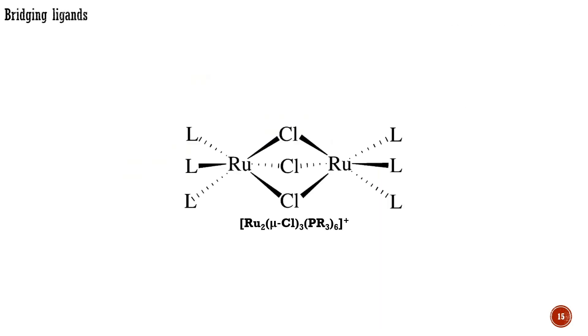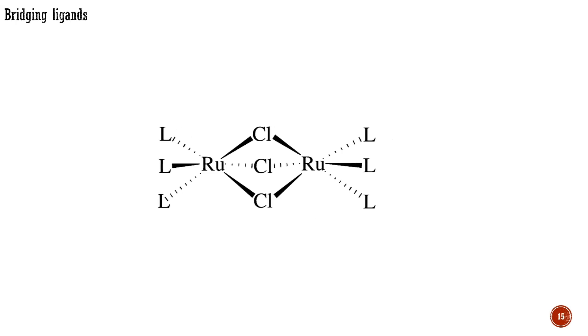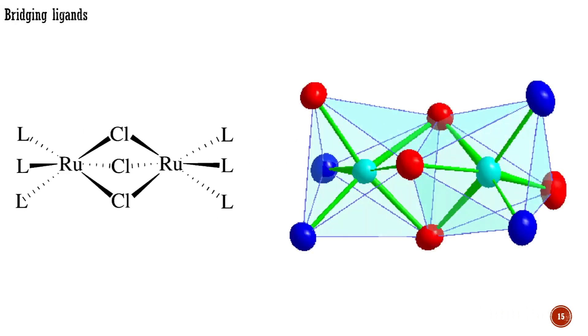Ligands that have a donor atom with more than one lone pair can often donate one pair to each of two or more metal ions to give polynuclear complexes, such as this ruthenium complex where L is a phosphine ligand. The bridging group is represented by the Greek letter μ. In particular, this dinuclear complex consists of two octahedra sharing a face containing three chloride bridges.